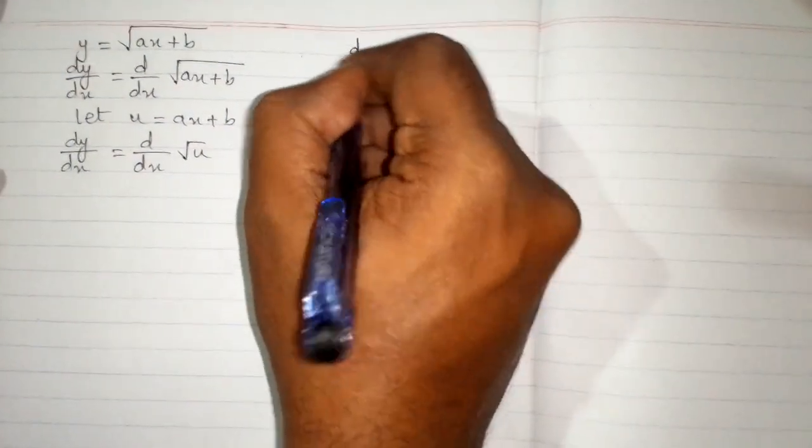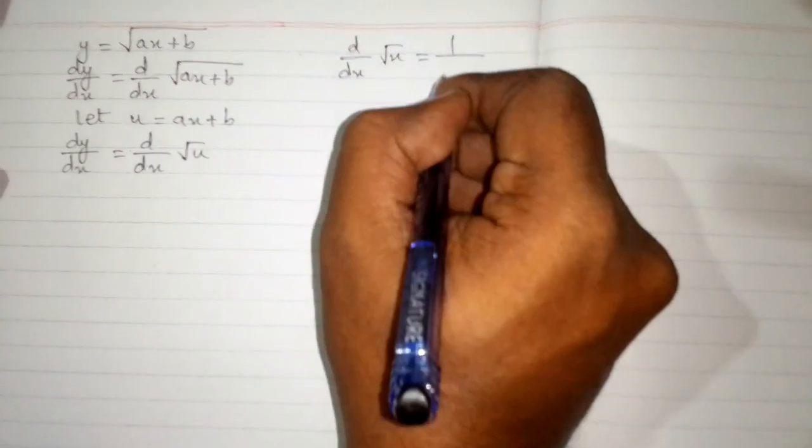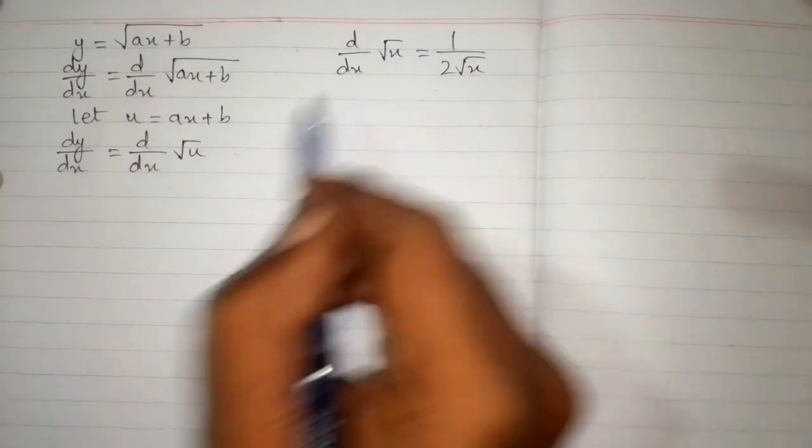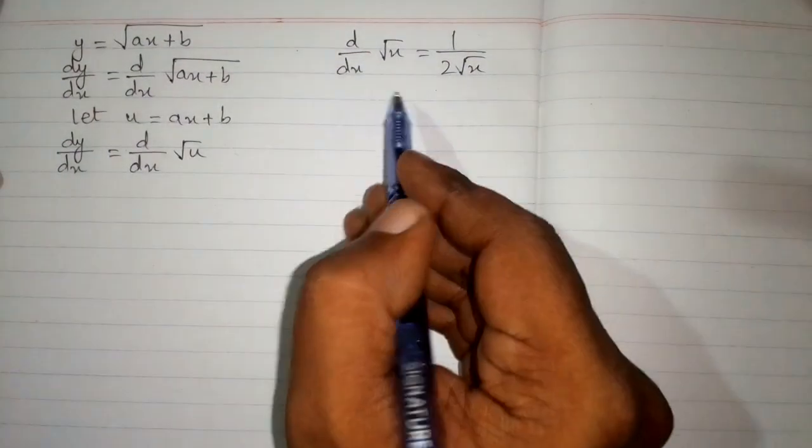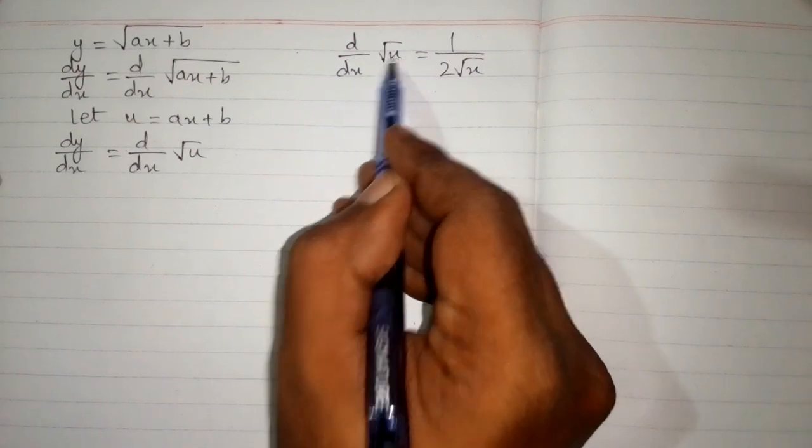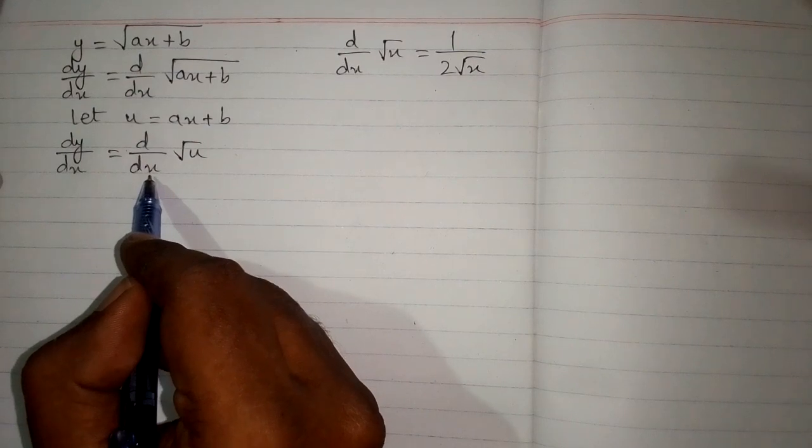We know that the derivative of square root of x is 1 upon 2 square root of x. So we can apply this formula over here. But we can see that we have same variables in these places, so we must have u in place of this x.